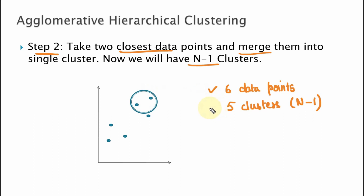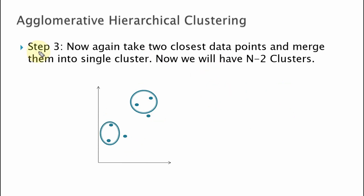In step 1, we had a cluster for each point. We combined the closest points and made a cluster, resulting in n-1 clusters. Now in step 3, we will again take the two closest data points and merge them into a single cluster, giving us a total of n-2 clusters. As you can see, we have six data points and have merged two sets of points — the first and the second — so now we have a total of four clusters, which is n-2.